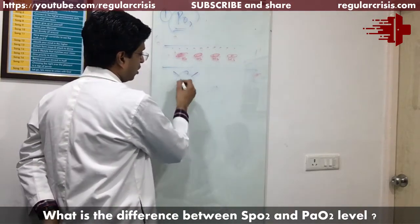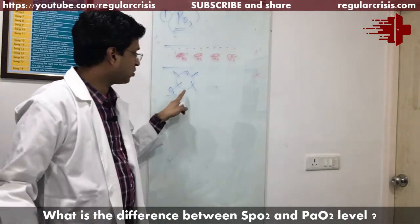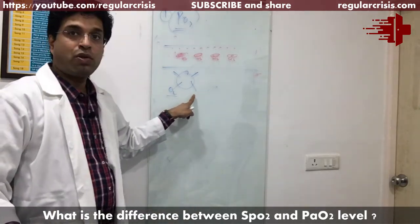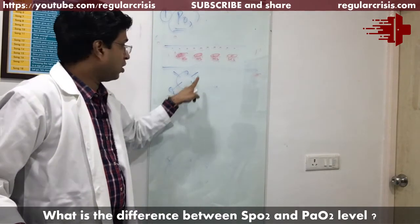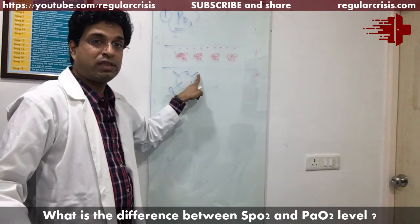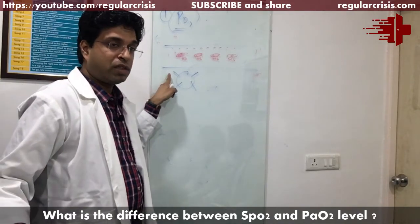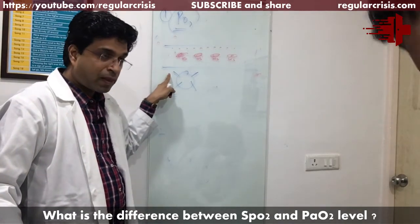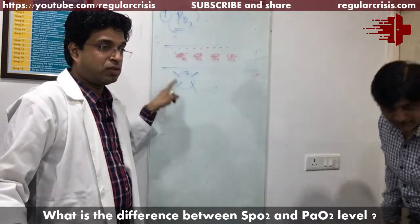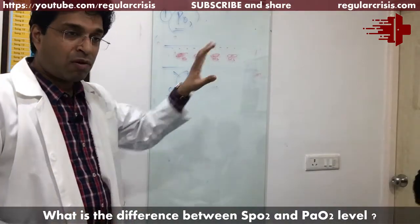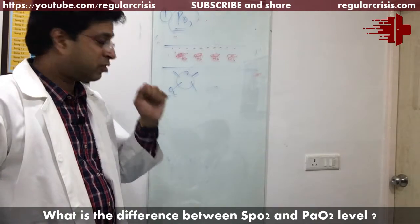Hemoglobin can carry four oxygen molecules. If there is one oxygen molecule, it is 25% saturated; two oxygen molecules means 50% saturated; three oxygen molecules means 75% saturated; and four oxygen molecules attached with hemoglobin means 100% saturated. It is the average of all hemoglobin concentration which is being saturated with oxygen that is picked up by the pulse oximeter.